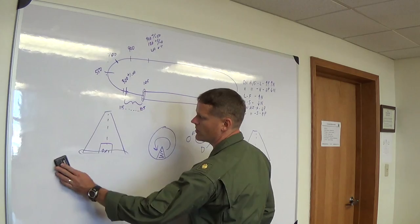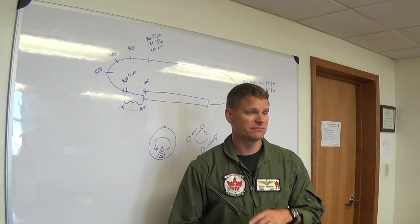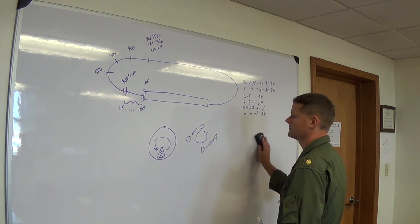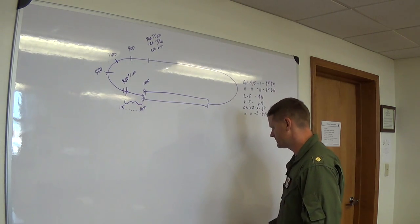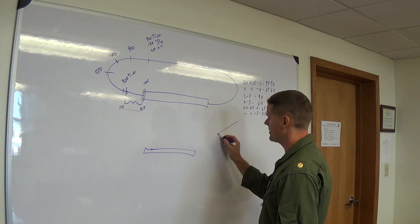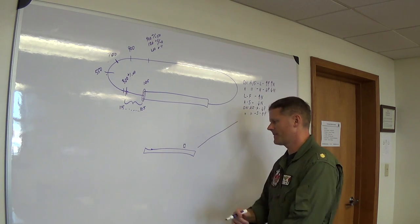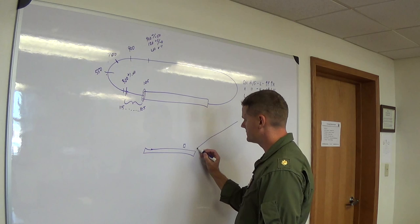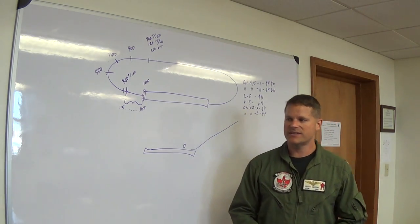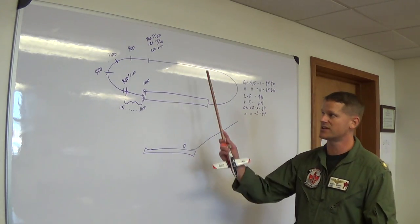Once you cross the threshold, start your level-off at 10 to 20 feet, and level the plane at 5 to 10 feet above the ground. Let's talk about what that does. As you level off, you get ground effect. Here's the glide path from the side — you're aiming at the numbers, the RDO card is about 500 feet down the runway. At 10 to 20 feet start your level-off; at 5 to 10 feet you're level. Once you level off, you pull the PCL back toward idle.